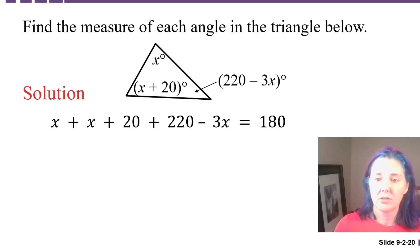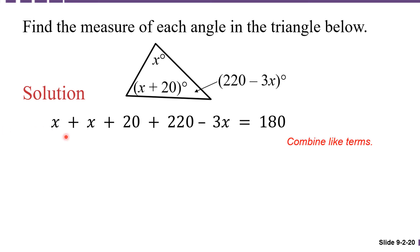To solve this equation for the unknown, the x, we're going to need to combine all the like terms on the left side. The x term, the x term, and the negative 3x term, those are like terms, we need to combine them. They're going to combine to give us 2x minus 3x is negative x, plus 20, and 220 is 240. So, we have negative x plus 240 equals 180. Now, we need to get x by itself, so I'm going to subtract 240 from both sides. When we do that, we're going to get negative x equals negative 60.